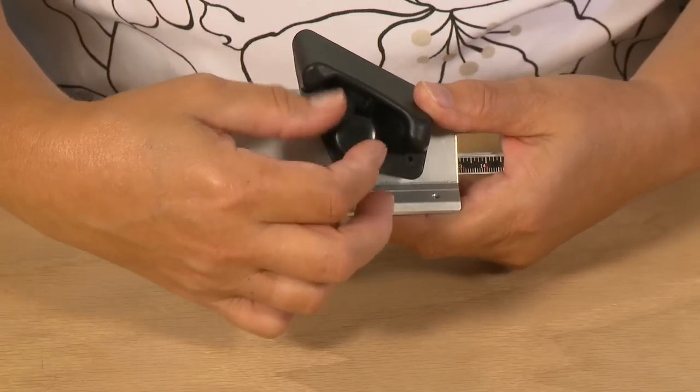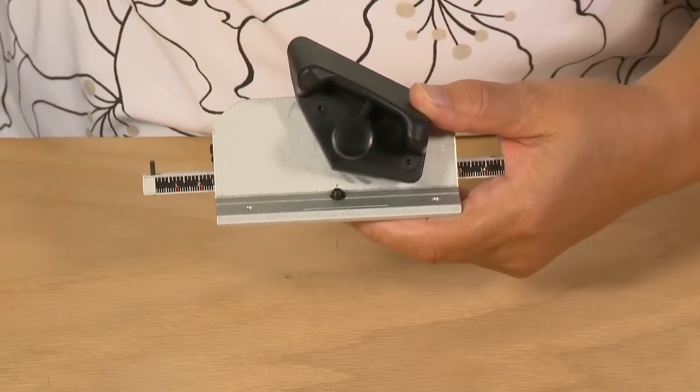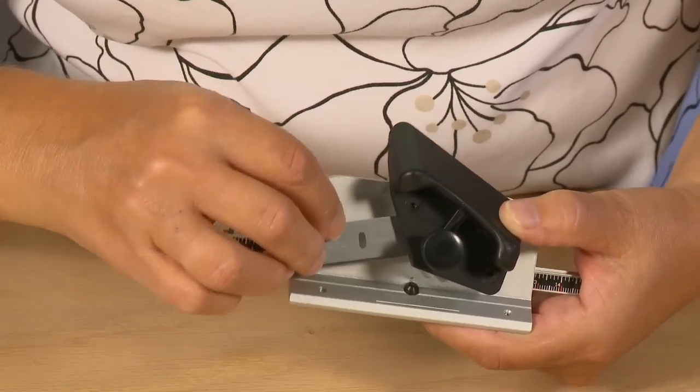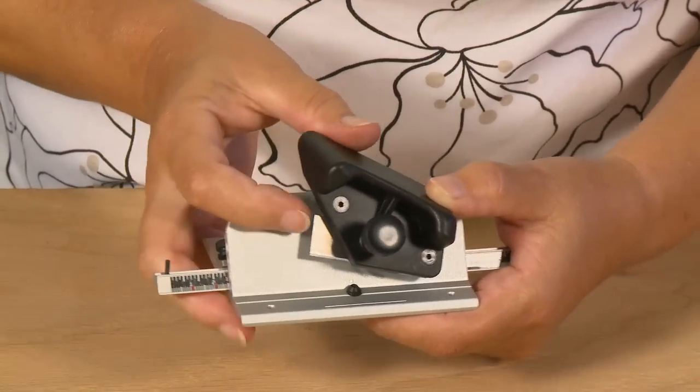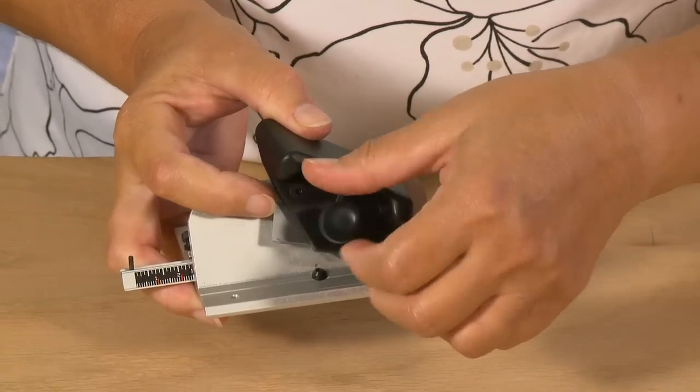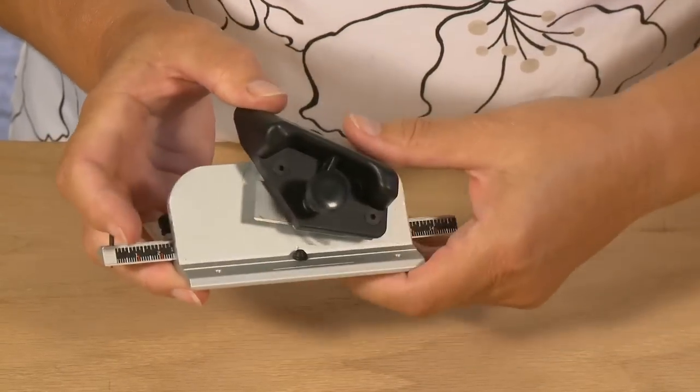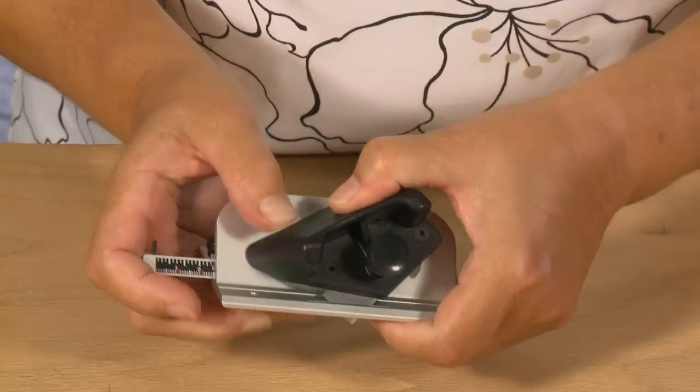Then loosen the blade knob. Install one Logan 270 blade sharp side down into the back of the blade holder and re-tighten the blade knob. Rotate the blade holder down and re-tighten the retaining screw.